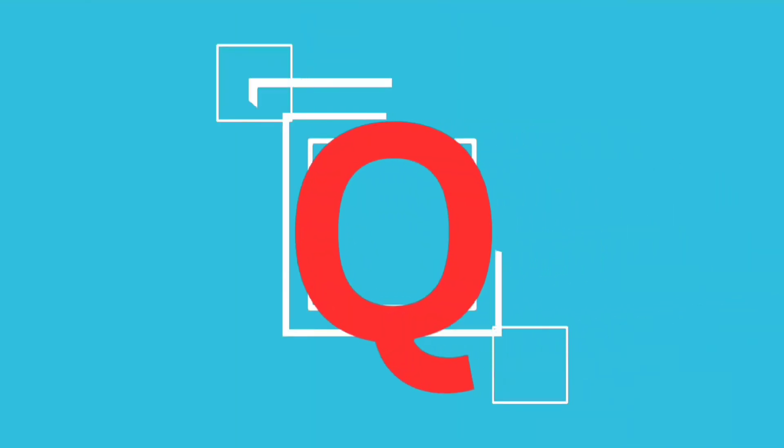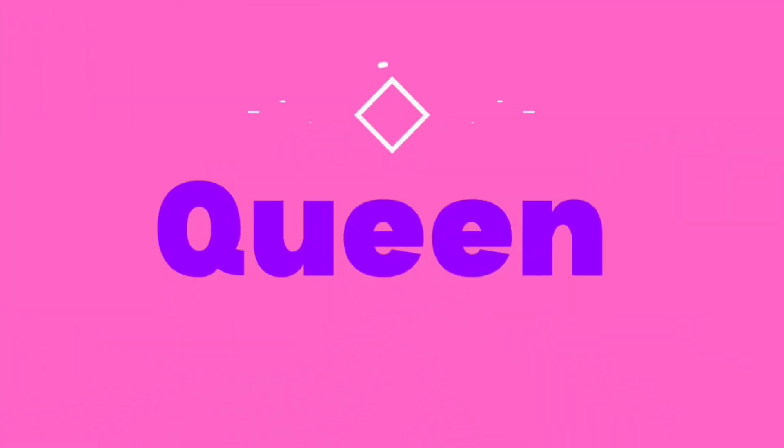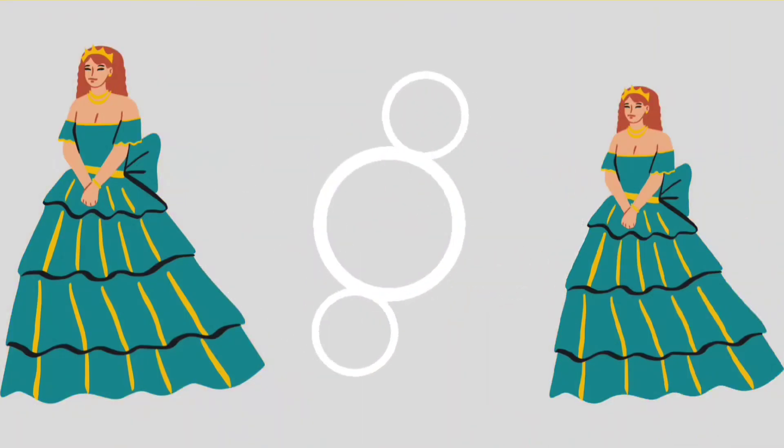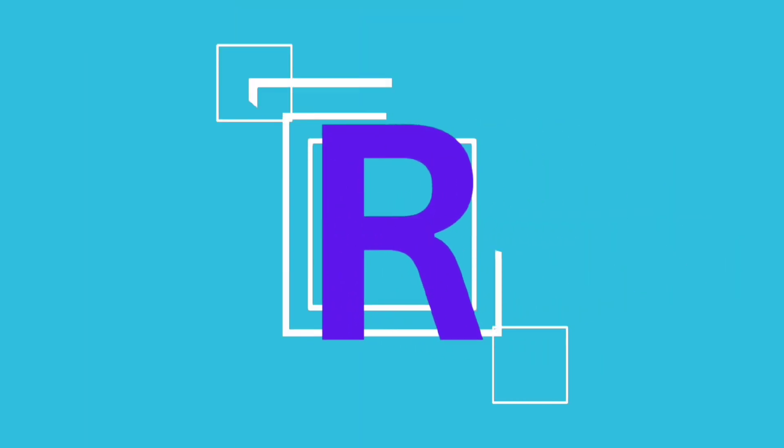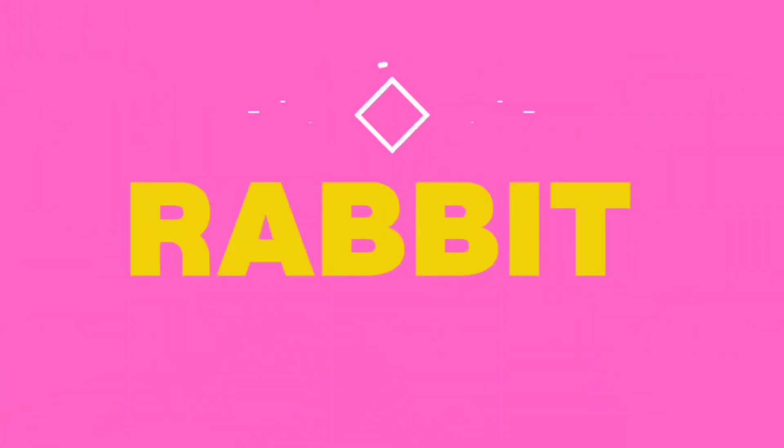P. P is for Parrot. Q. Q is for Queen. R. R is for Rabbit.